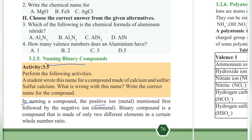In naming a compound, the positive ion — that is the metal — is mentioned first, followed by the negative ion. In naming a binary compound, the positive ion is a metal. A binary compound is made of only two different elements in a certain whole number ratio.